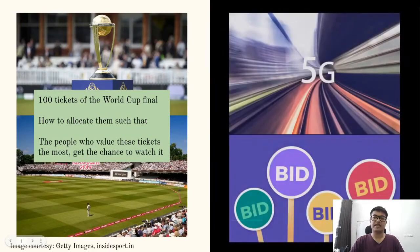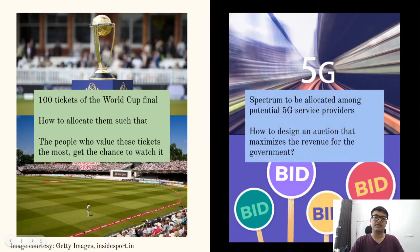Similarly, a scarce resource like the spectrum needs to be efficiently and fairly allocated among the competing bidders. But since the desirability of the spectrum by the bidders is not known to the government, how should the government design the auction to (a) reveal the desirability and (b) maximize the revenue from the sale?